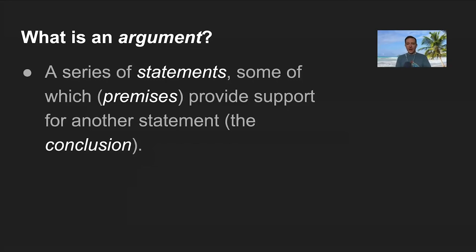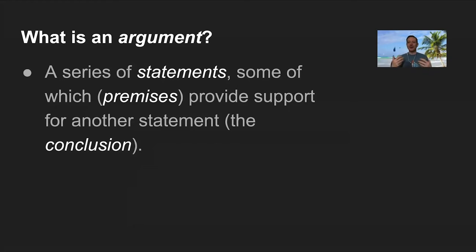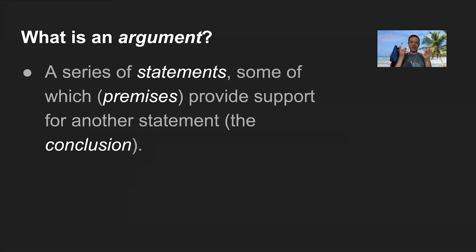So what is an argument in logic? An argument is a series of statements, some of which — the premises — provide support for another statement, the conclusion. An argument in ordinary speech can mean a disagreement, but an argument in logic is a formal structure where a series of statements provide support for some other statement, the conclusion. Premises are the reasons given, and the conclusion is the statement claimed to follow from those premises.